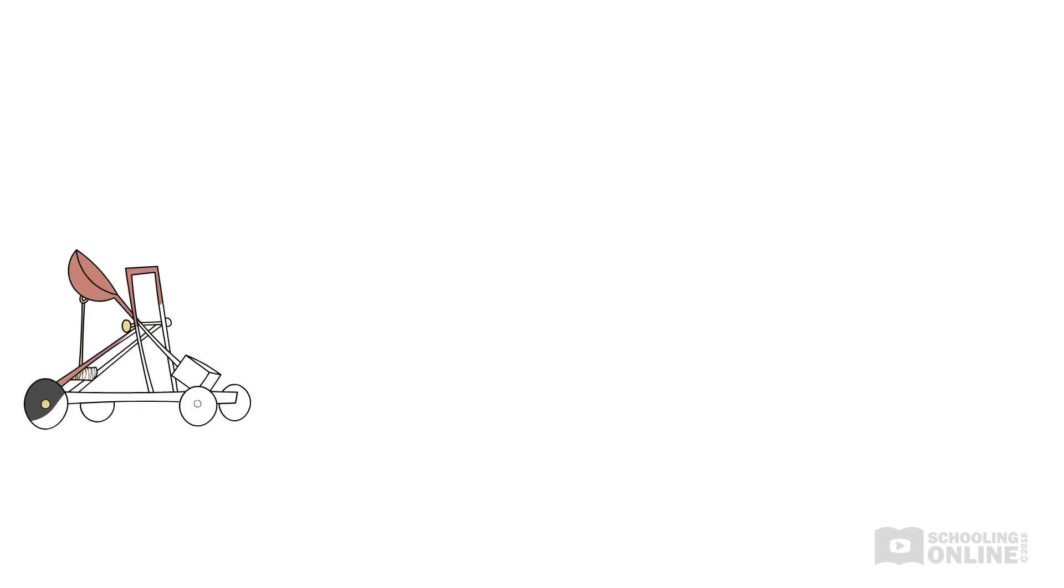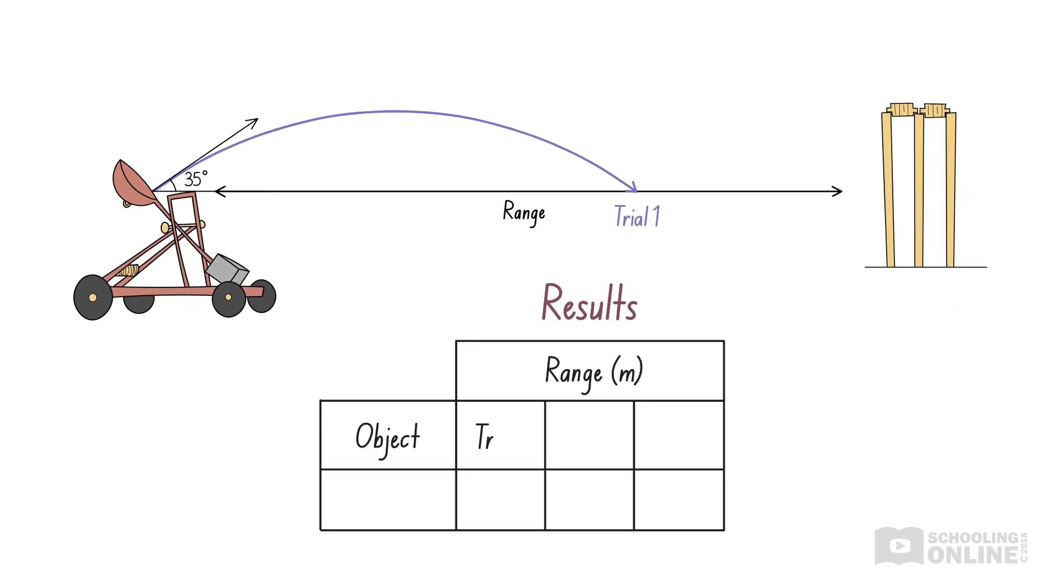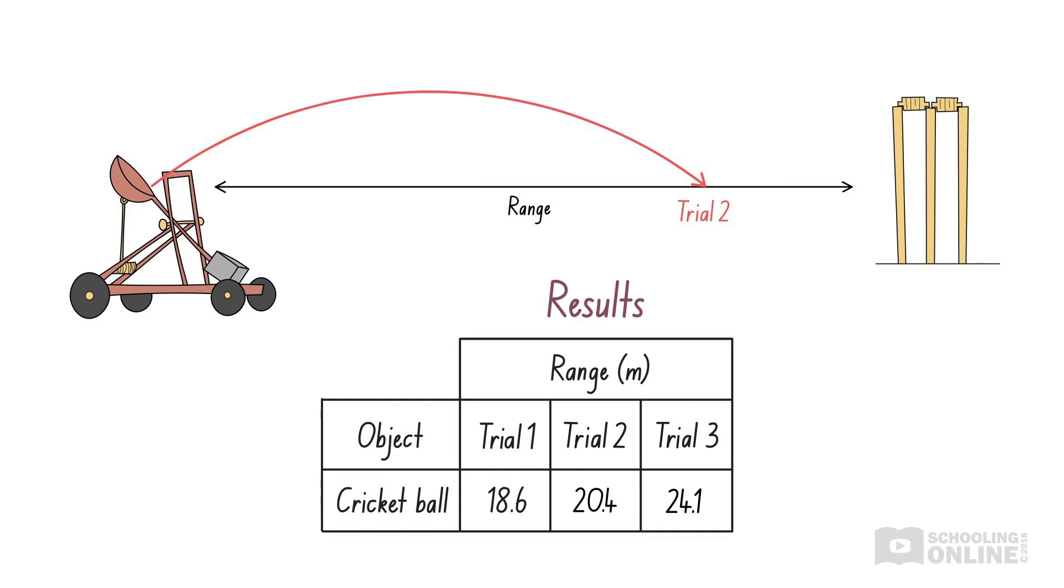Let's see how this applies to an experiment on projectile motion. We are trying to determine the range of a cricket ball when it is launched by a catapult at an angle of 35 degrees above the horizontal. In other words, we're finding the distance travelled by the cricket ball. We perform three trials and get slightly different results each time. What could have caused this variation in our results? Well, in the third trial, we might have accidentally launched the ball at a larger angle. After all, it is hard to accurately measure the launch angle using a protractor, let alone maintain the same launch angle across all three trials. If so, the increased launch angle may have caused the cricket ball to travel further.